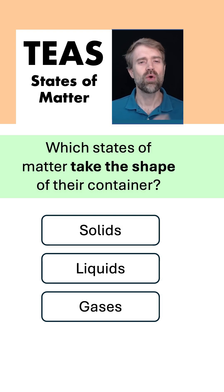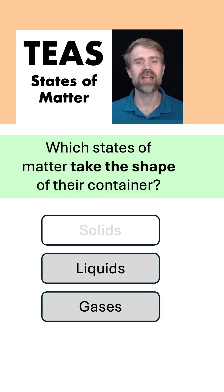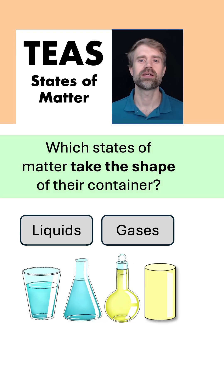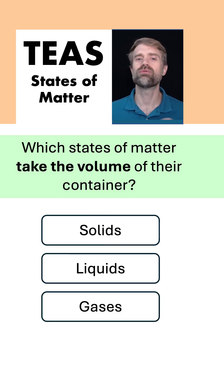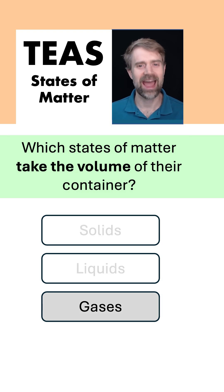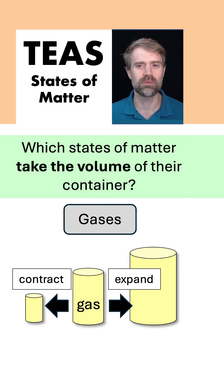Two more terms you might see. Which states of matter take the shape of their container? Liquids and gases — their shape changes to match the container they're in. How about which states of matter take the volume of their container? Gases. Gases can expand and contract; they can change their volume to fill different sized containers.